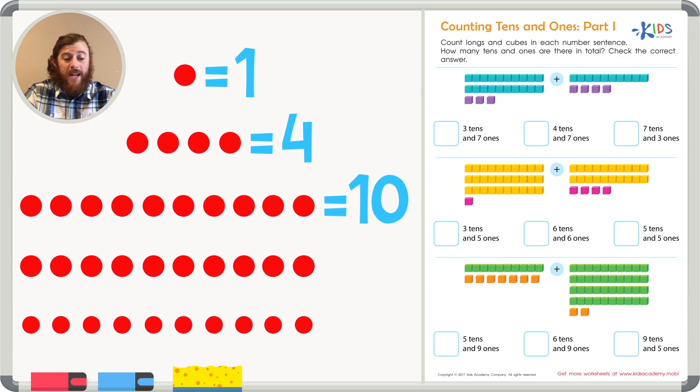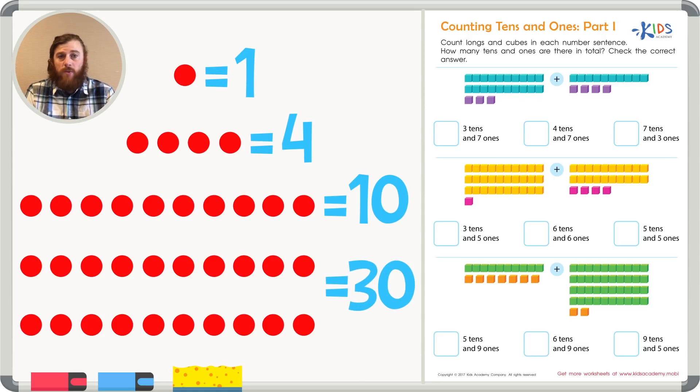If I had 3 longs, or 3 tens, that would be equal to 30. We can count by tens when we're adding these up: 10, 20, 30. Let's use this information to help us complete the worksheet.